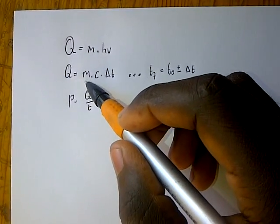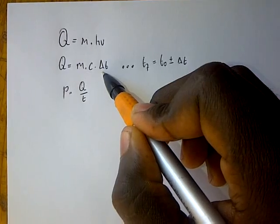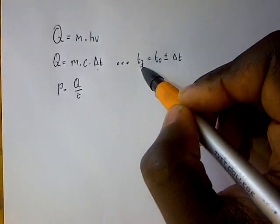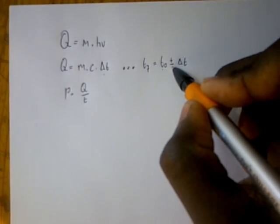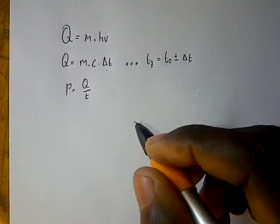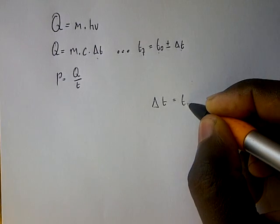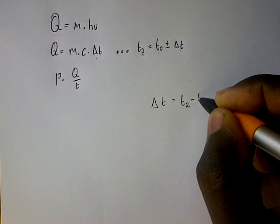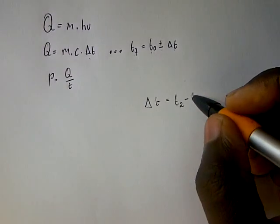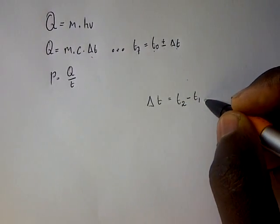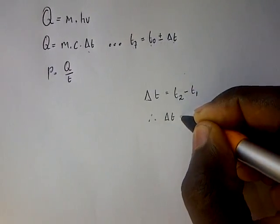The second formula says heat energy equals mass multiplied by c, which is specific heat capacity, multiplied by delta T, which is change in temperature. The final temperature equals original temperature plus or minus change in temperature. Change in temperature equals final temperature T2 minus initial temperature T1. Sometimes our final temperature is less than our initial temperature, so the change in temperature will be negative.